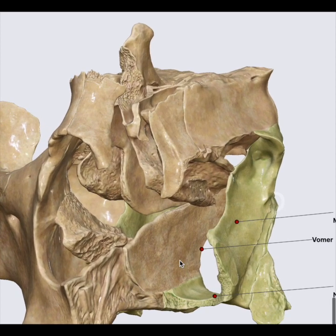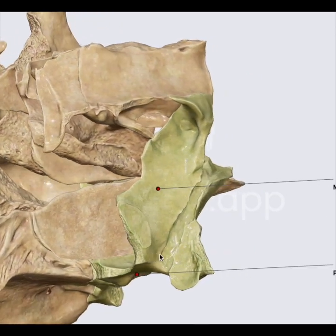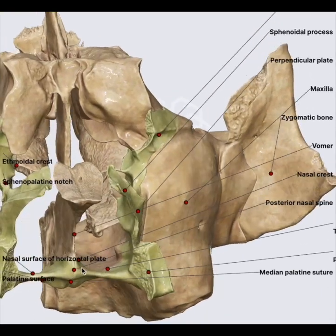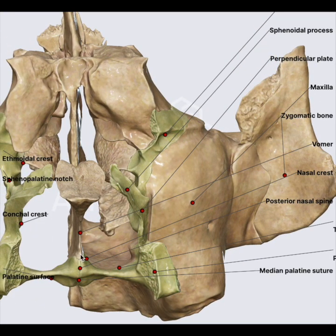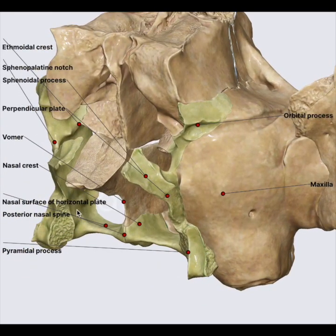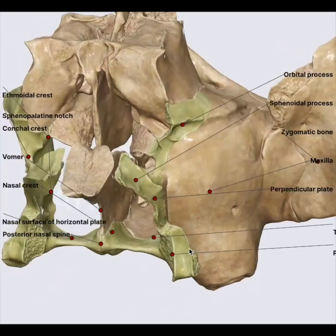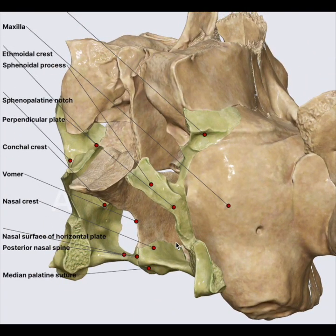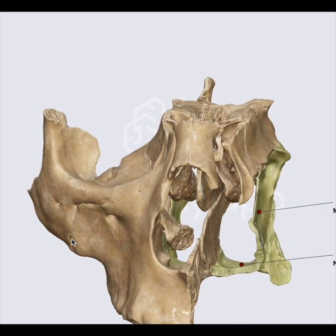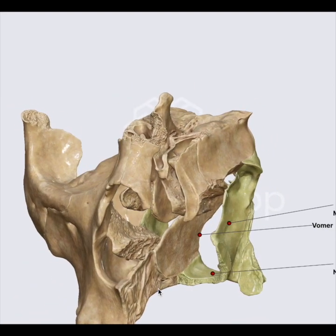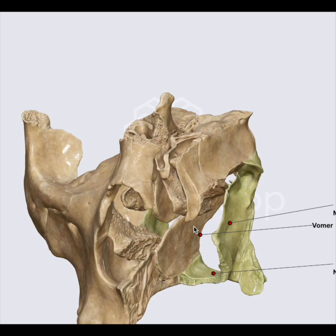Thirdly, I recently did a few adult choanal atresia cases. In those cases I removed the vomer and rostrum — that is the posterior part — and from the posterior-most part of the floor of the nasal cavity, I raised a flap which covered the raw surface of the bone. This technique is widely used by Professor Castelnuovo, Shahzad Ahmed, and many other renowned rhinologists. Use this and put it over there and you will get a really good result.